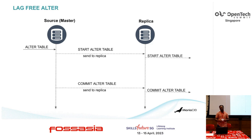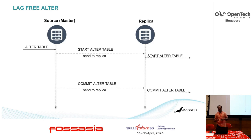It won't block the replication for that time. Once the alter is completed on the master side, there will be a commit alter event sent to the replica. Once the commit alter is received on the replica, the commit alter command will be applied and the table structure will be changed in the replica. Until that time, you cannot see the table structural changes in the replica until you receive a commit.